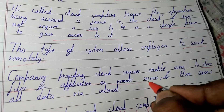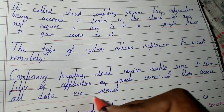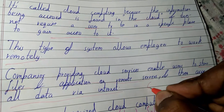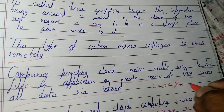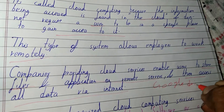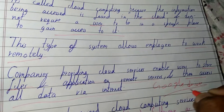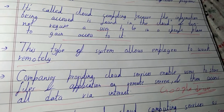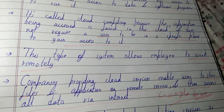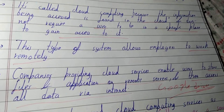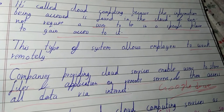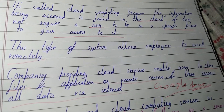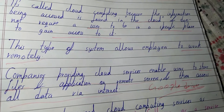Companies providing cloud services enable users to store files and applications on remote servers and then access all data via the internet. The biggest example of this is Google Drive, where you can store around 15 GB of data and access it whenever you are connected to the internet — just login to your Google account and use Google Drive instead of storing data on your personal computer.